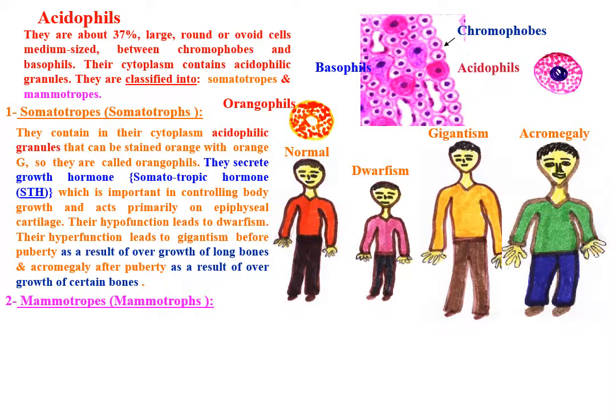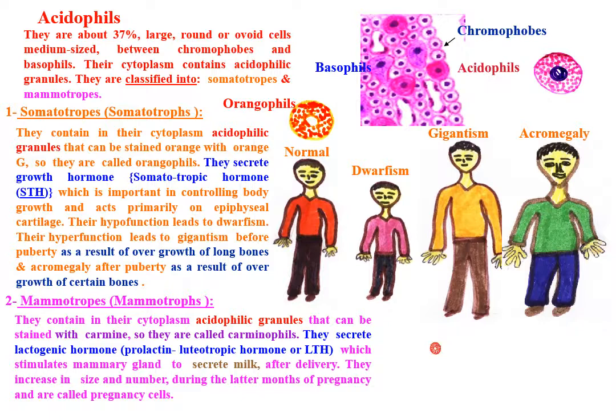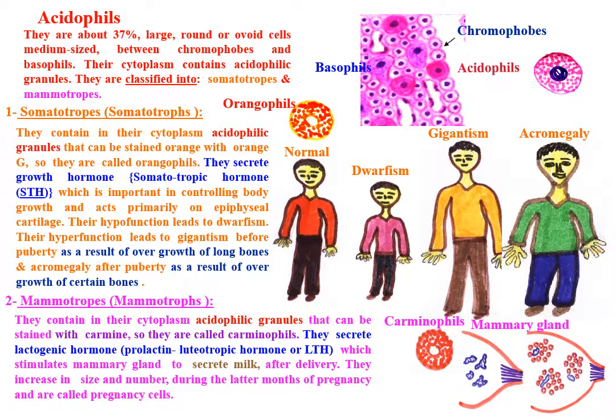Mammotropes contain acidophilic granules in their cytoplasm which can be stained with carmine, so they are called carmineophiles. These cells secrete lactogenic hormone, prolactin-luteotropic hormone, which stimulates the mammary gland to secrete milk after delivery. They increase in size and number during the later months of pregnancy and are called pregnancy cells.